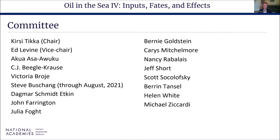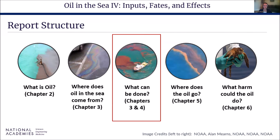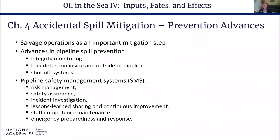The result is a 500-page publication with comprehensive illustrations, available for free online from the National Academies. It covers many topics and references more than a thousand peer-reviewed publications. Report structure follows questions: what is oil and where does it come from (Chapters 2 and 3), spill response (Chapter 4, today's focus), and where oil goes — fate and impacts. Notably, this is the first report in the series with a standalone chapter on spill response.